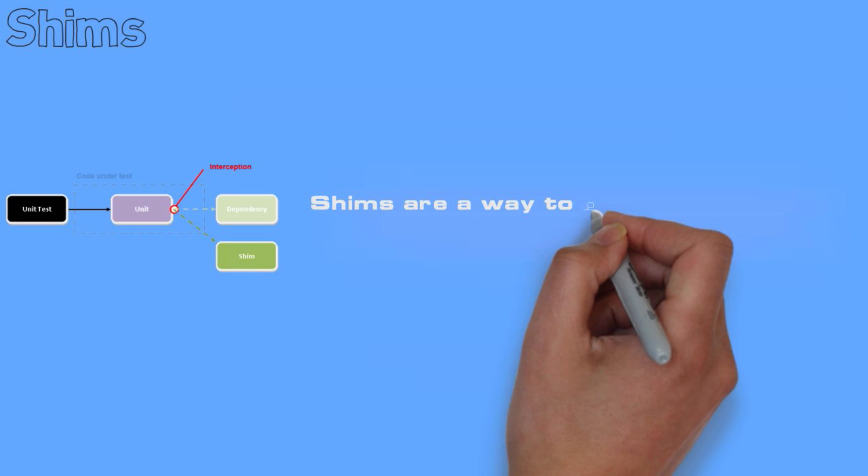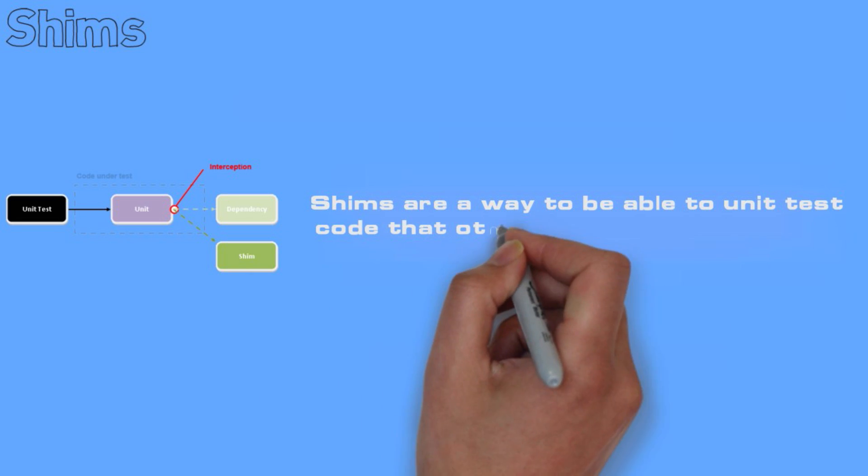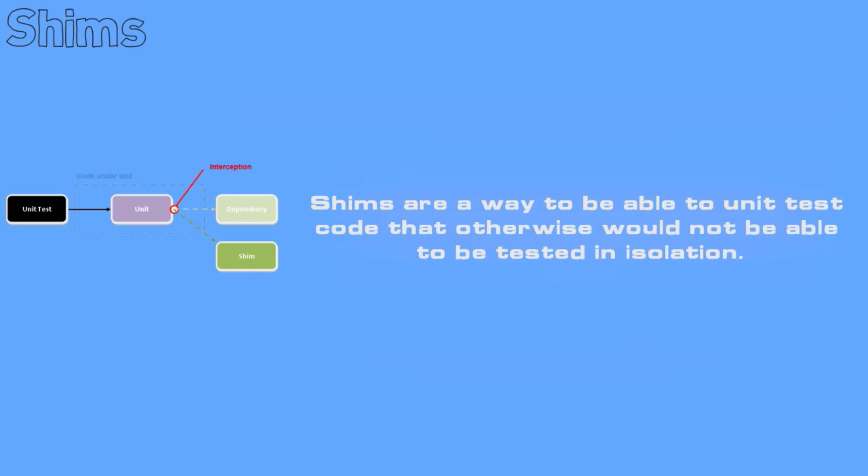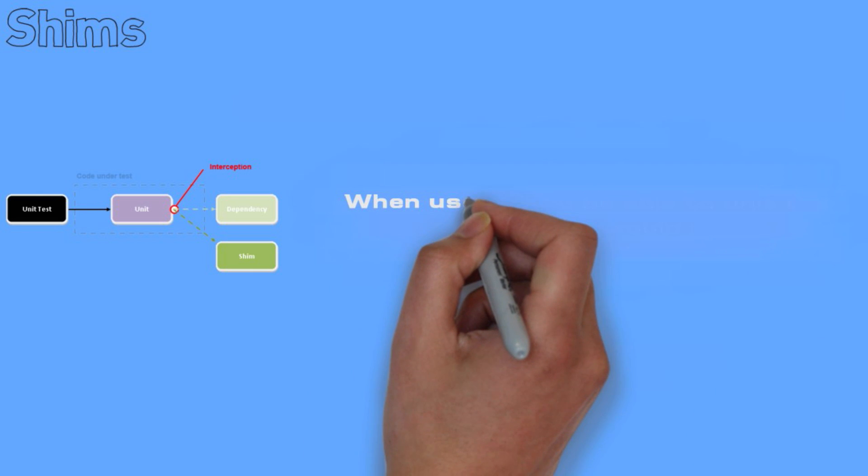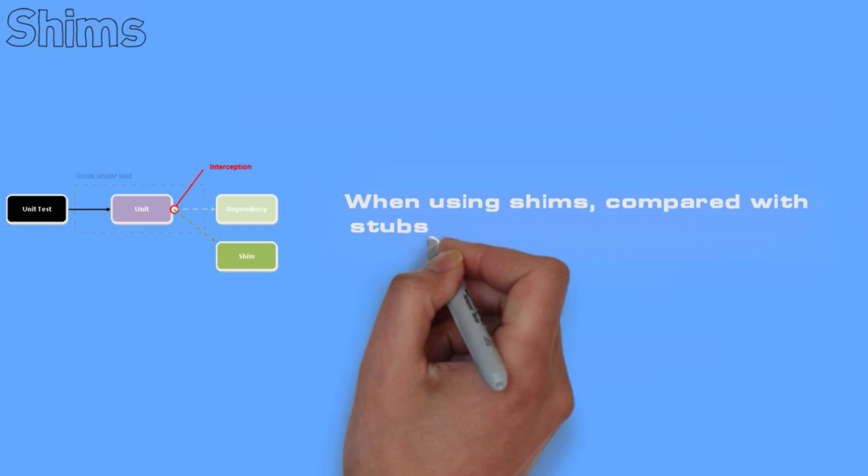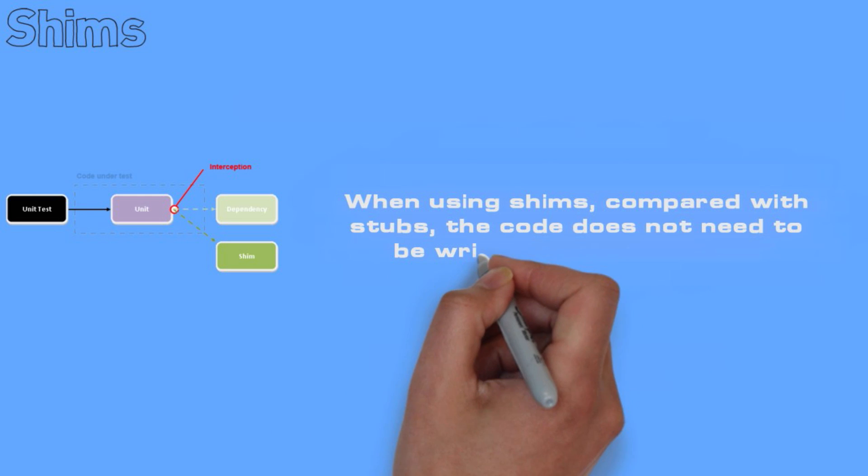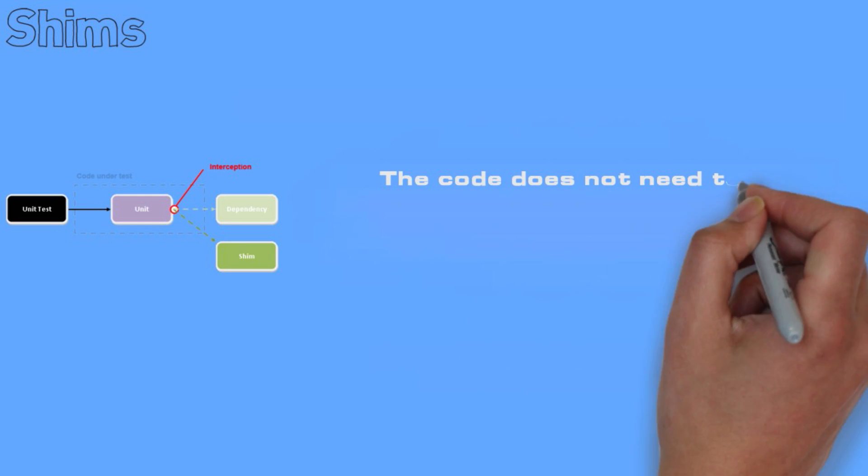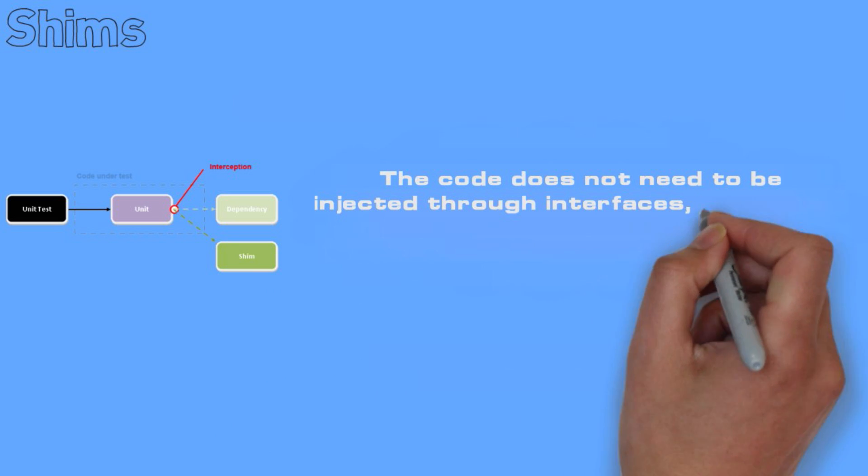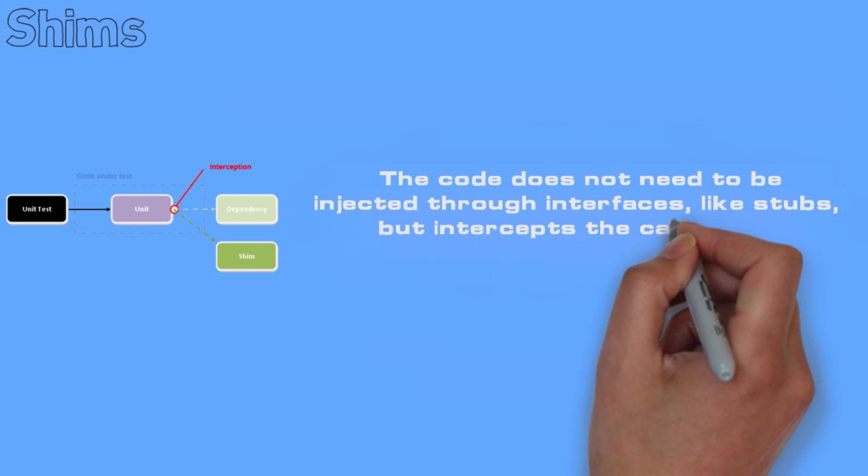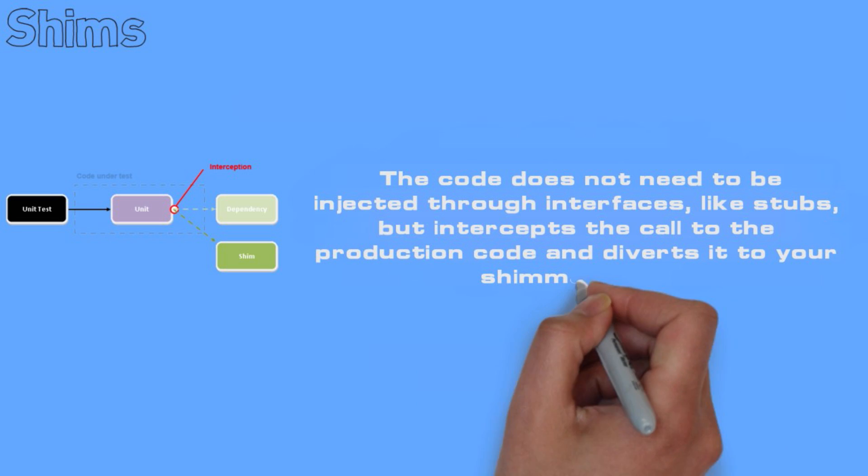SHIMS: Shims are a way to be able to unit test code that otherwise would not be able to be tested in isolation. When using shims compared with stubs the code does not need to be written in a certain way. The code does not need to be injected through interfaces like stubs but intercepts the calls to the production code and diverts it to a shim code.